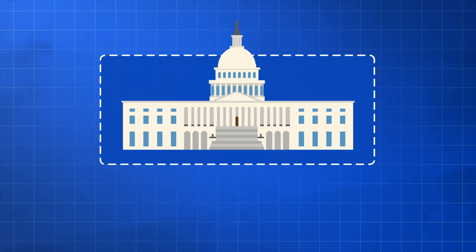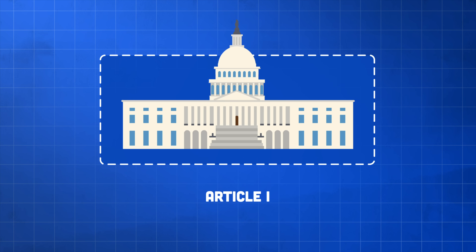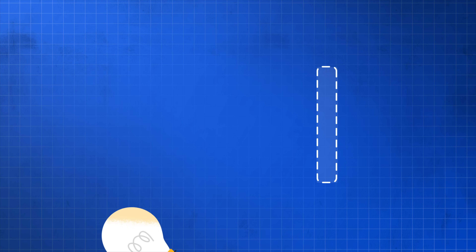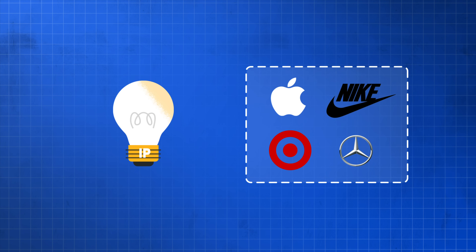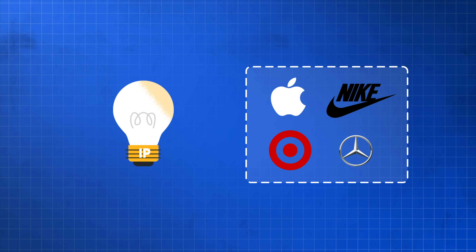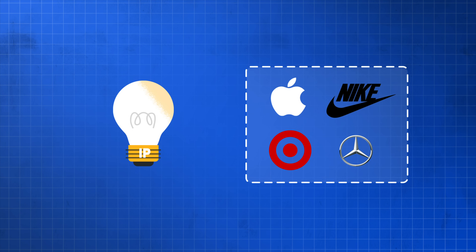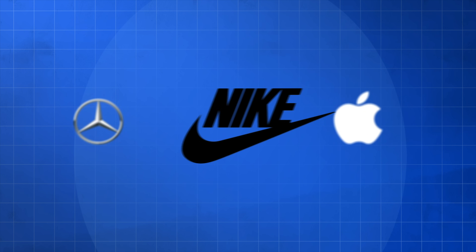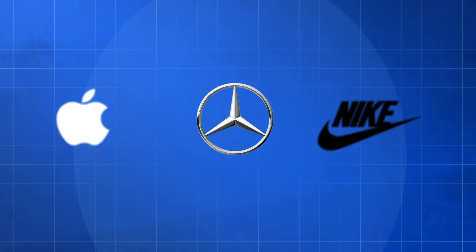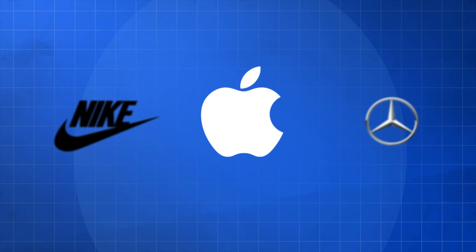Both of those laws are contemplated and expressly authorized in Article I of the Constitution, which grants Congress the power to create patent and copyright laws. We also have trademark laws. Trademark laws protect, essentially, brands or business names — the names that are used and other ways of signifying where particular products come from, whether it's your Nike swoosh or any number of other ways in which we signify that a product comes from one particular source and not from another.